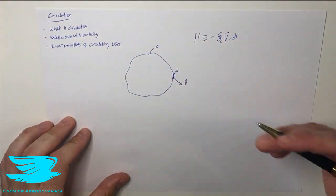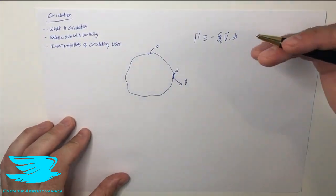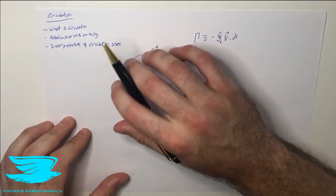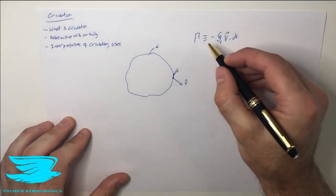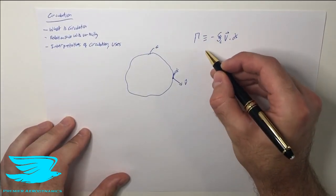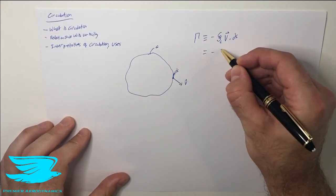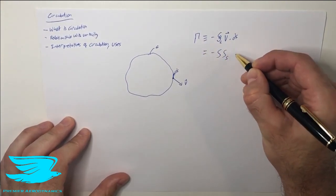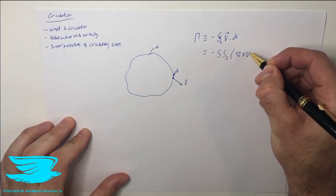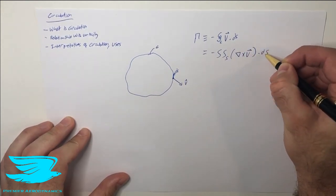First of all, let's talk about its relationship with the vorticity, because once we understand that as well, we can then figure out more uses for the circulation. So the circulation not only equals this, but it also equals the negative surface integral of effectively vorticity.